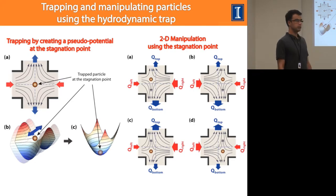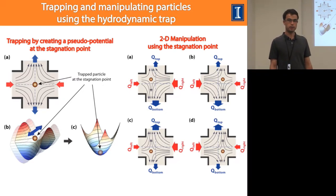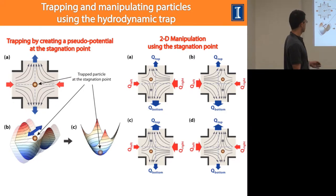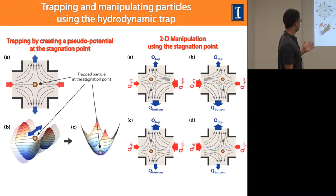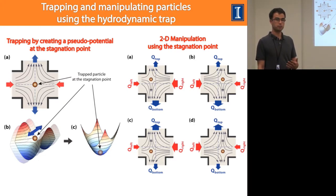We can do this in two dimensions, manipulating the stagnation point in both the flow-in and flow-out directions. This enables us to trap and confine a particle, then manipulate it in two dimensions at the microchannel junction. The four cases shown on the right — A, B, C, and D — show the stagnation point positioned at four different quadrants of the microchannel junction, enabling 2D particle trapping and manipulation.